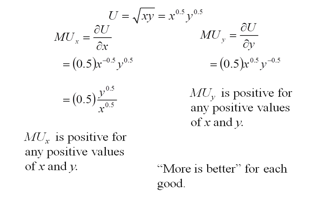So what we've shown here is more is better for each good. Positive marginal utility means more is better of that good.